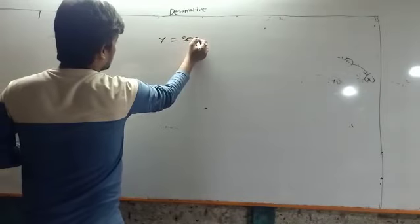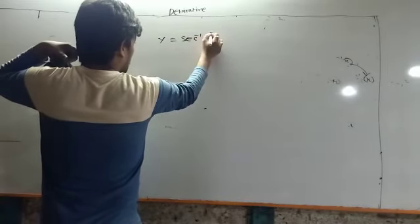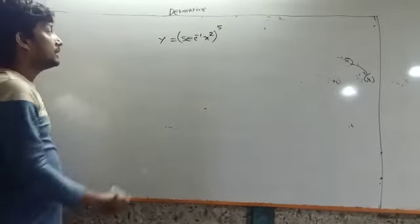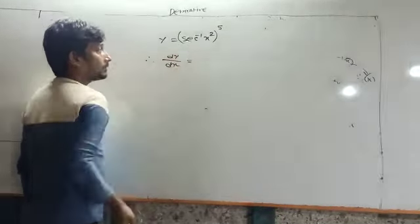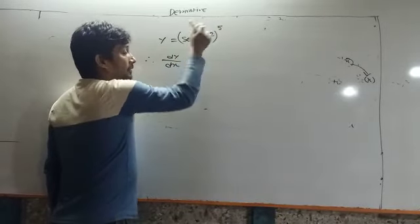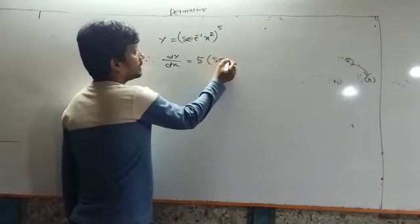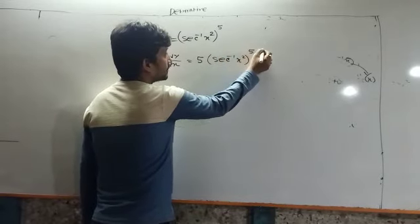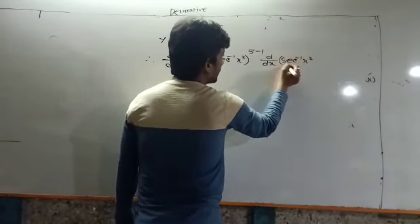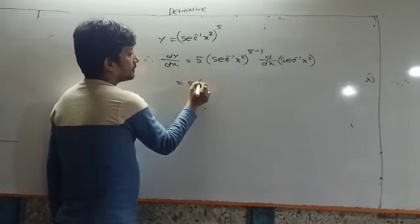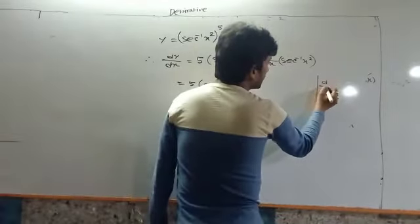y equal to sec inverse x square, whole to the power of 5. dy by dx — variable in the power of constant. First format: 5 into sec inverse x square, whole to the power 5 minus 1, then ddx of sec inverse x square. Even the ddx of the second part: 5 into sec inverse x square whole to the power 4.